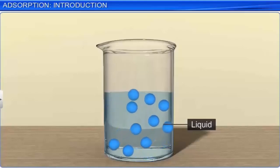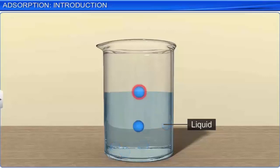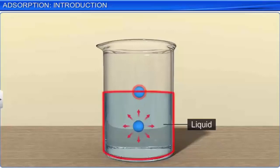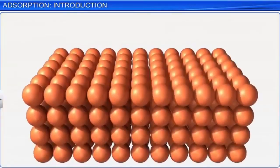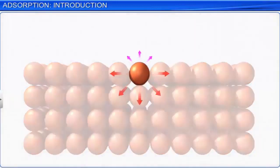Let us consider two molecules, one present in the bulk and the other on the surface of the liquid phase. The molecule in the bulk experiences a balanced force of attraction from all directions. However, the molecule on the surface is surrounded by liquid molecules of the same phase and also by fewer molecules from the gaseous phase. As a result, the molecule lying at the surface experiences an unbalanced force, or some net inward force of attraction. Similar inward forces of attraction exist at the surface of solids.